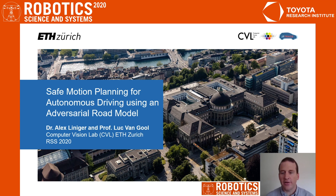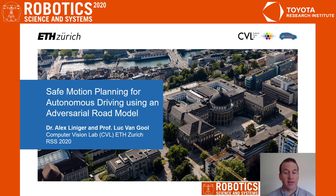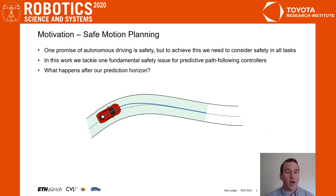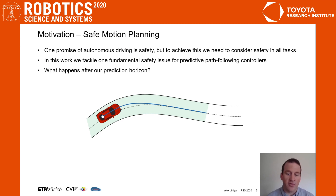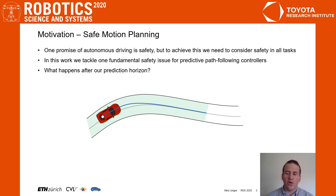My name is Alex Lineker and in this video I will present my RSS 2020 paper 'Safe Motion Planning for Autonomous Driving using an Adversarial Road Model.' One main promise of autonomous driving is safety. However, to achieve this we need everything from safe perception to provable safe motion planning. In this paper we show how we can establish the safety of a predictive path following controller.